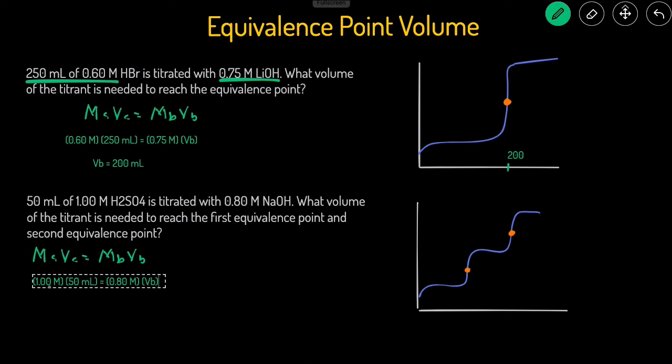So to do this, we can just multiply 1 by 50 and then divide by the 0.8 so we can isolate the VB. And that gives us a volume of 62.5 milliliters. So 62.5 milliliters is the volume that's needed to reach the first equivalence point. And then to figure out the volume that's needed to reach the second equivalence point, we just have to take the original volume and multiply by two. And that gives us 125 milliliters that's needed to reach the second equivalence point.